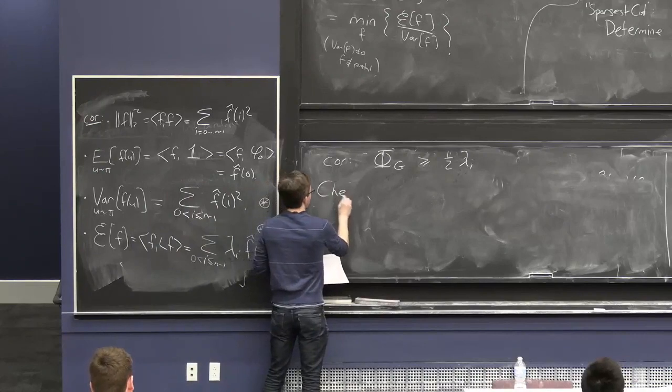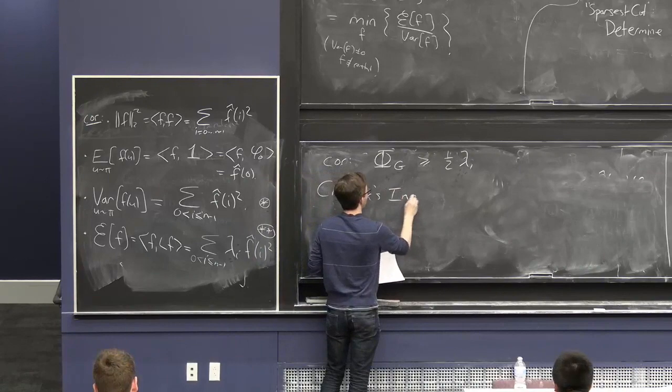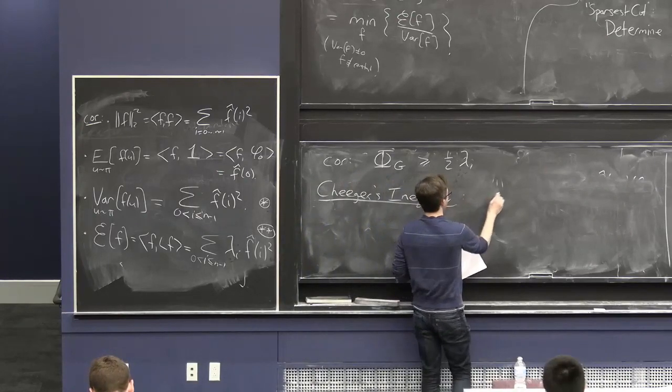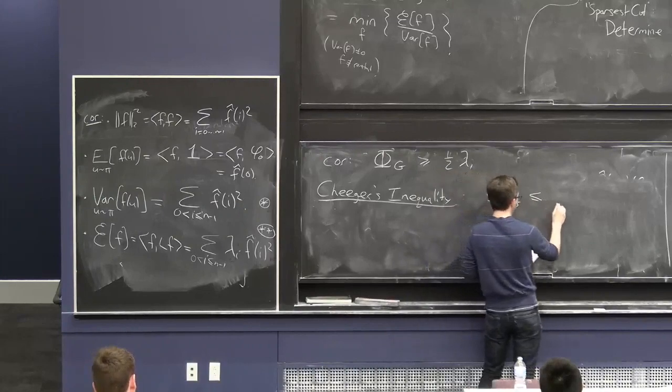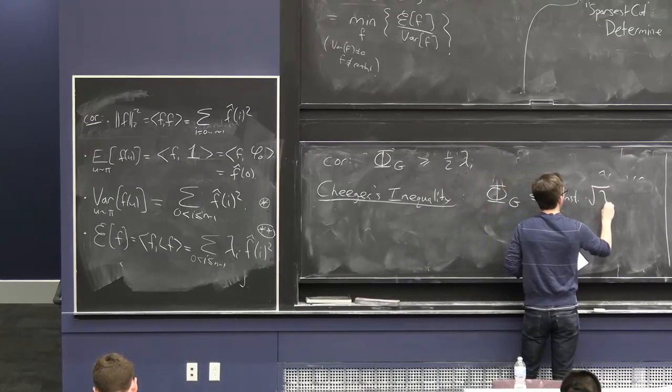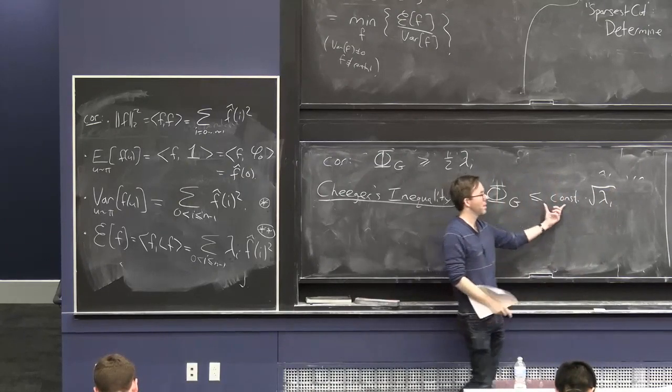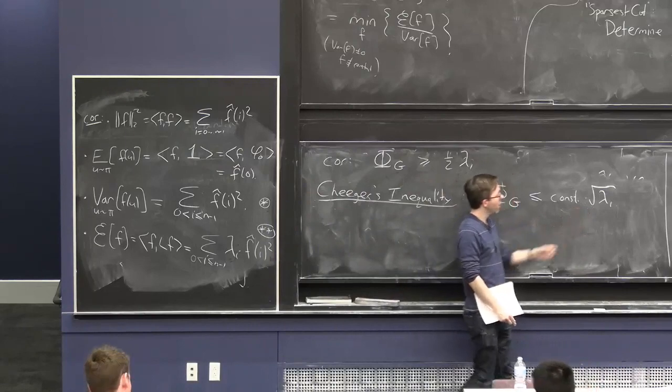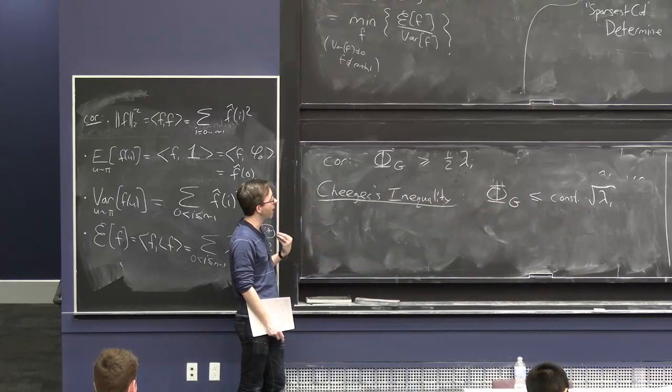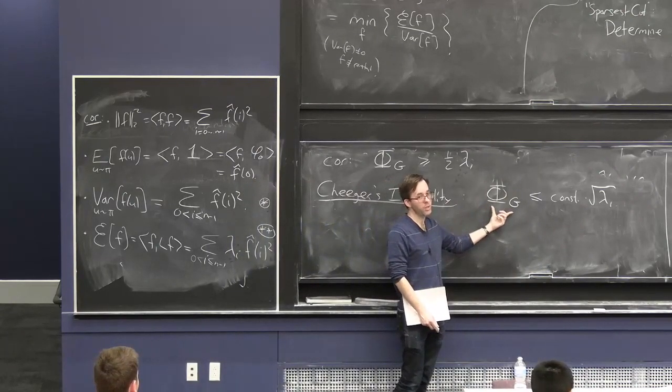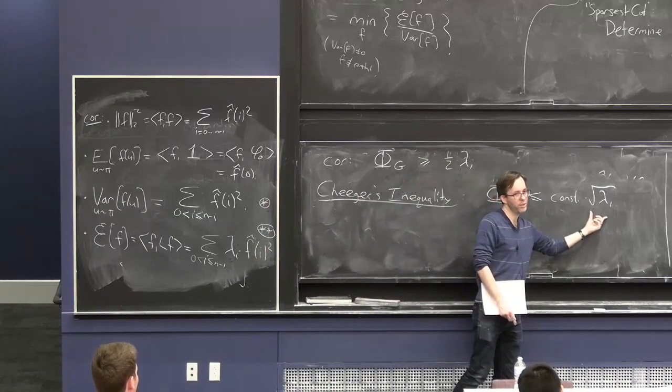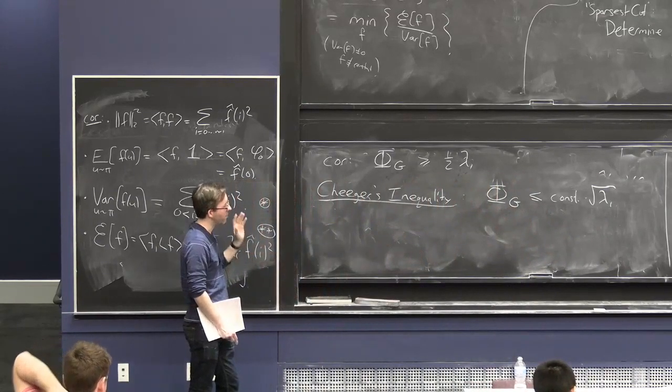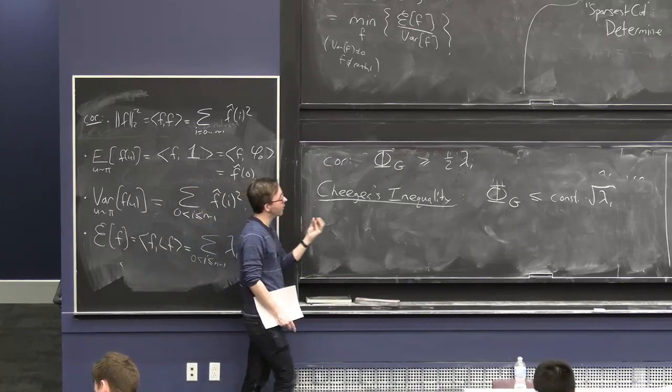But it turns out there's a pretty nice result called Cheeger's inequality. And it kind of gives the reverse inequality, but up to some mildly disappointing square root. So, it says that the conductance of the graph is, at most, a constant. I think the best constant is root 2 or something, but just remember that it's some universal constant, times square root of lambda 1. So, in some sense, that actually qualitatively is nice. It tells you that if lambda 1 is really small, then phi g is also really small. Now, this small can get square rooted. So, if lambda 1 is 0.00001, then maybe phi g is 0.01, or whatever, the square root of that number.